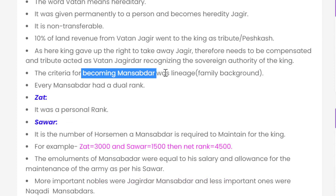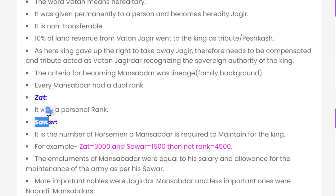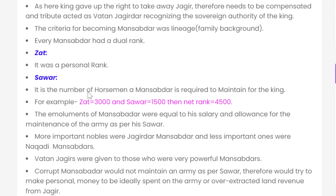The criterion for becoming a Mansabdar was lineage — family background. Every Mansabdar had a dual rank: one is Zat, and the other is Sawar. Zat is the personal rank of the Mansabdar, while Sawar is the number of horsemen the Mansabdar was required to maintain for the King.